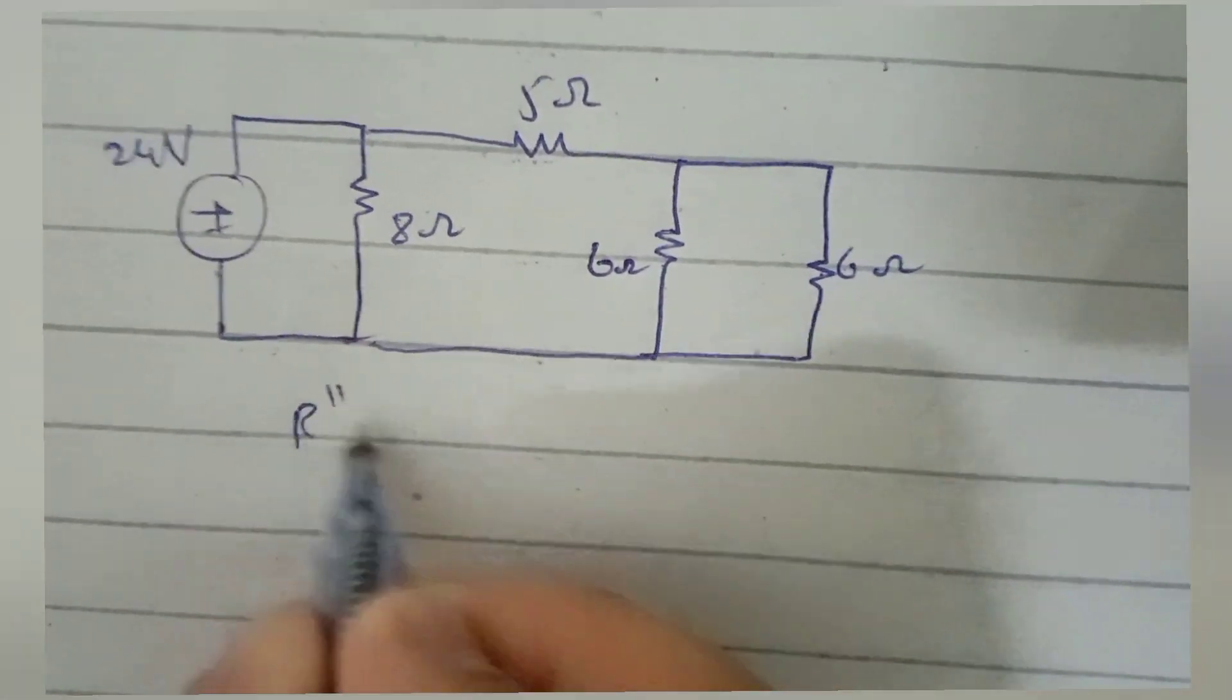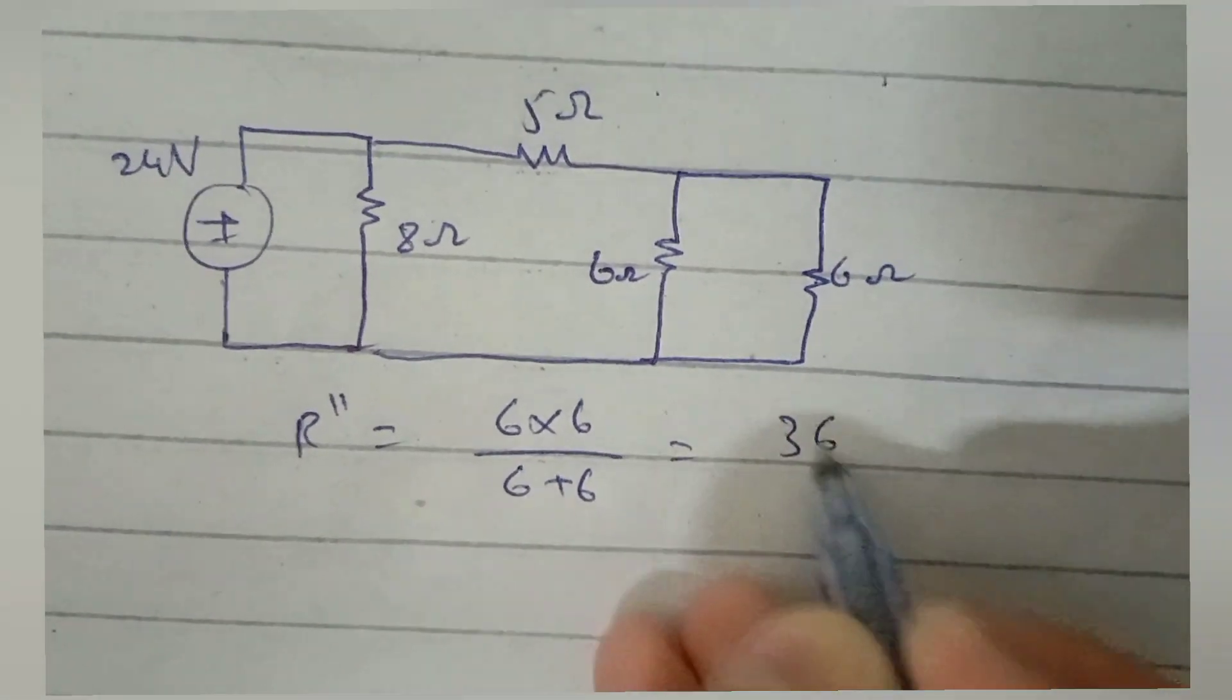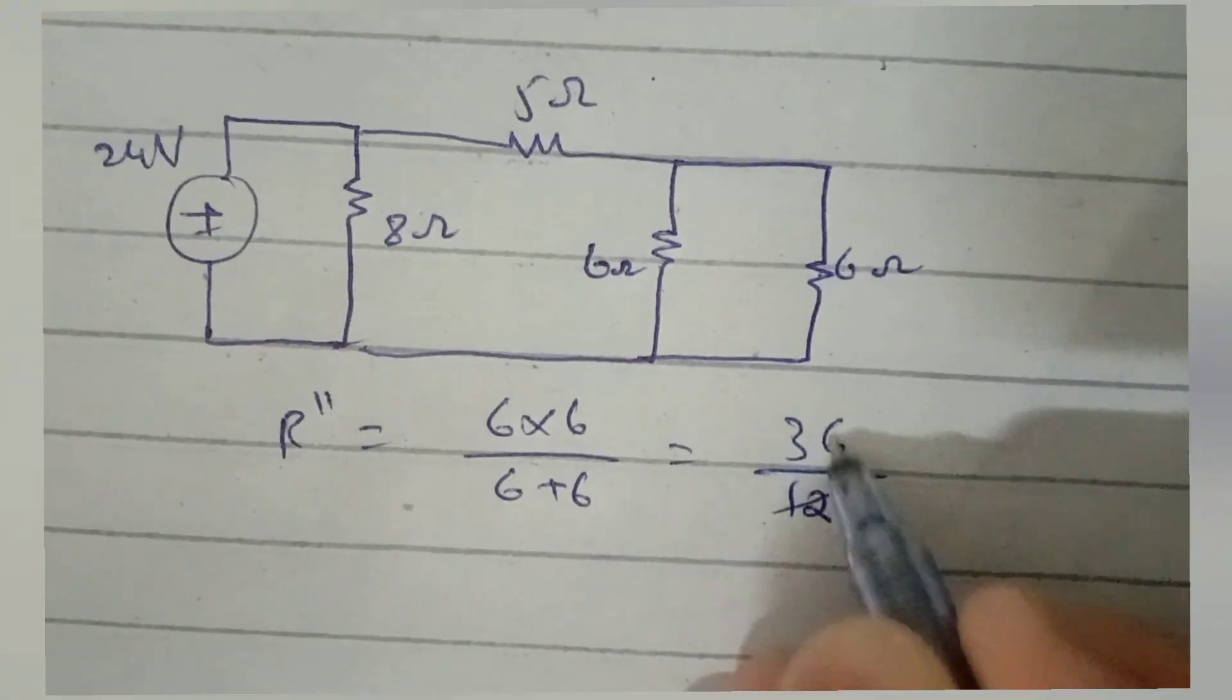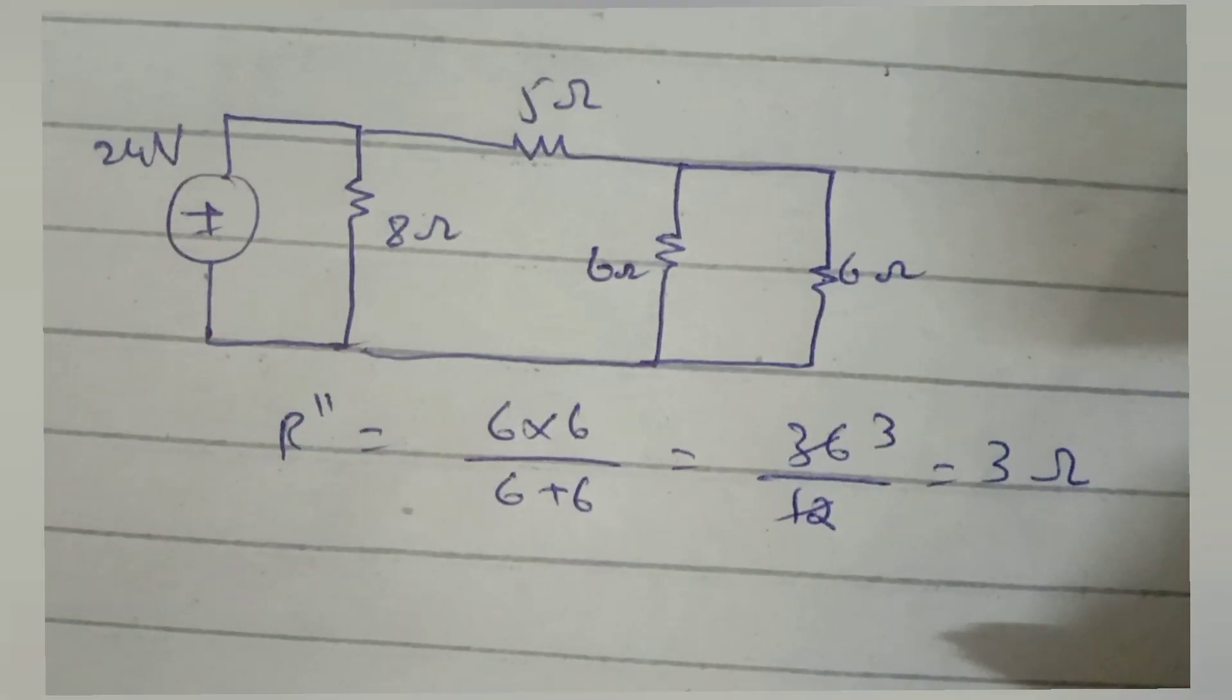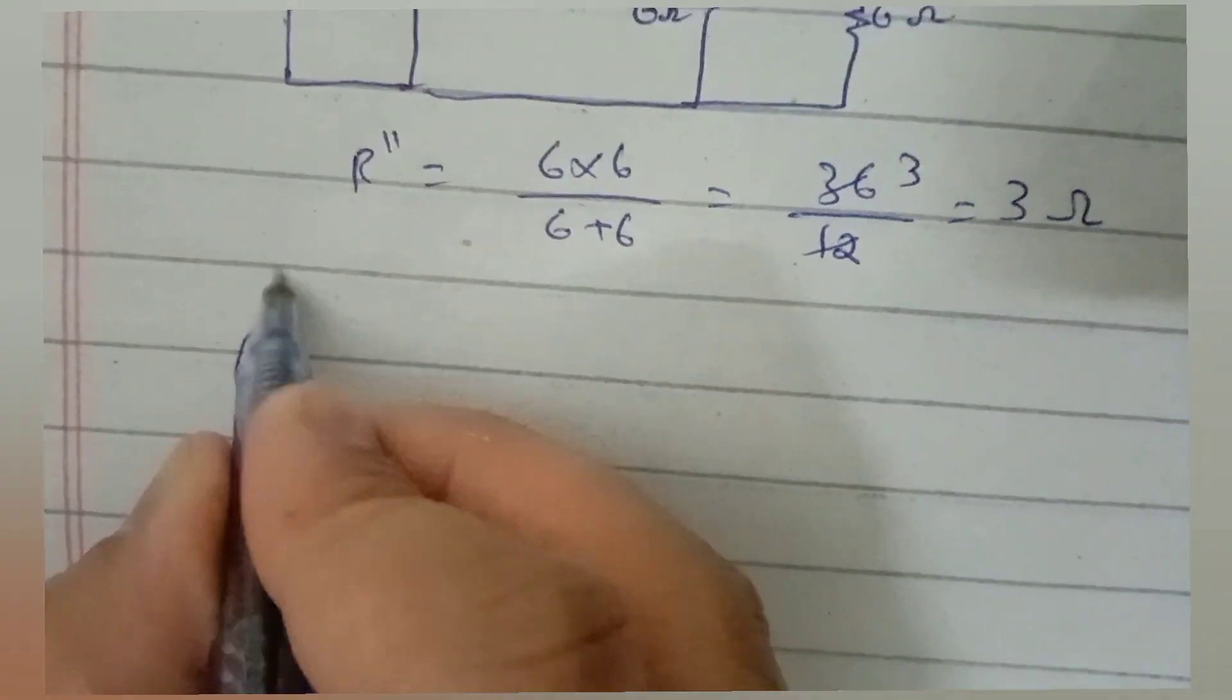In the next circuit, 6 and 6 ohms are connected in parallel, hence R'' will be 6 × 6 / (6 + 6) which equals 36/12 equals 3 ohms.